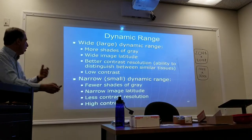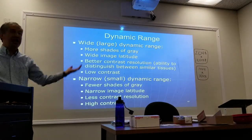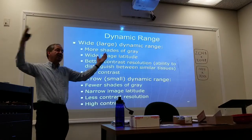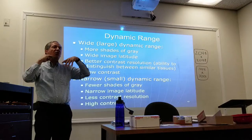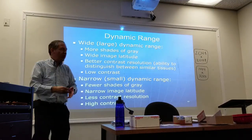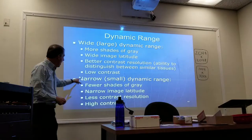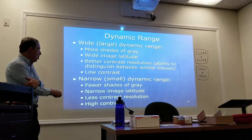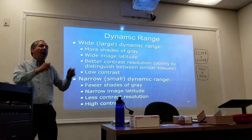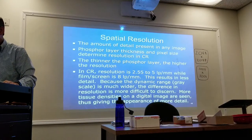A wide dynamic range means many shades of gray, which means wide latitude and better contrast resolution, but overall it's considered low contrast — because whenever you think of contrast, think of differences between adjacent densities. If you have many shades of gray, there's not much difference between each adjacent one, hence low contrast. A narrow dynamic range means fewer shades of gray, going from black to white quickly — that's high contrast.